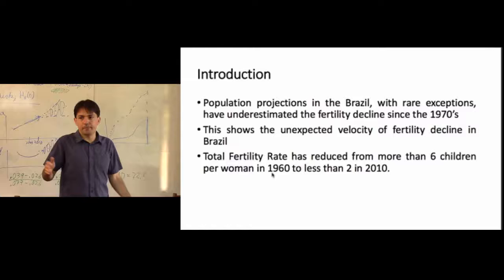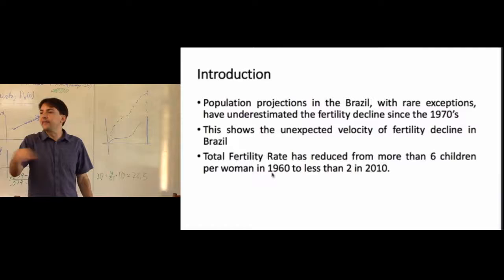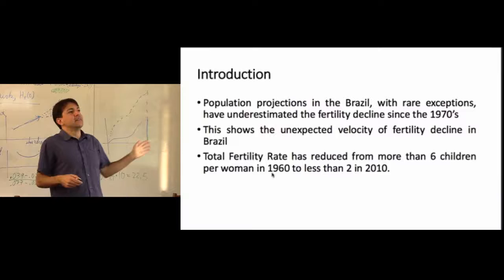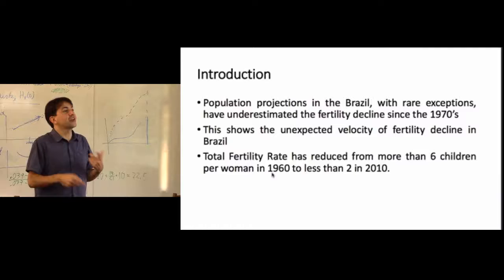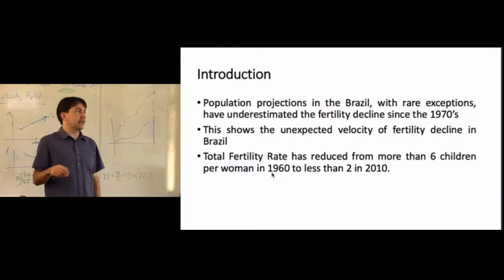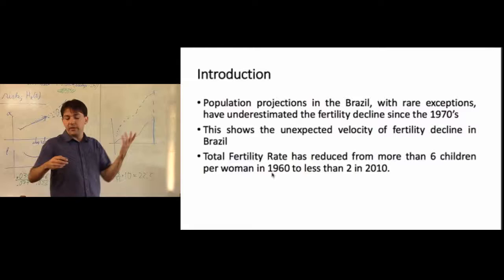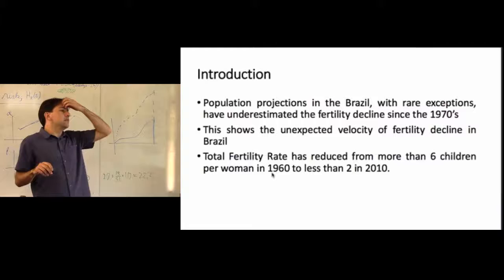Even in the early 2000s, projections were still placing fertility at the replacement level of 2.1, yet in 2010 we estimated fertility at 1.86. For the last 40 years we have been underestimating the fertility decline, which shows the unexpected velocity of decline in Brazil — dropping from six children per woman to less than two in only fifty years.